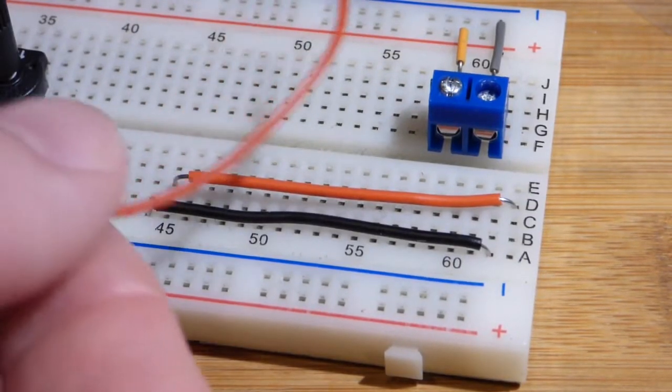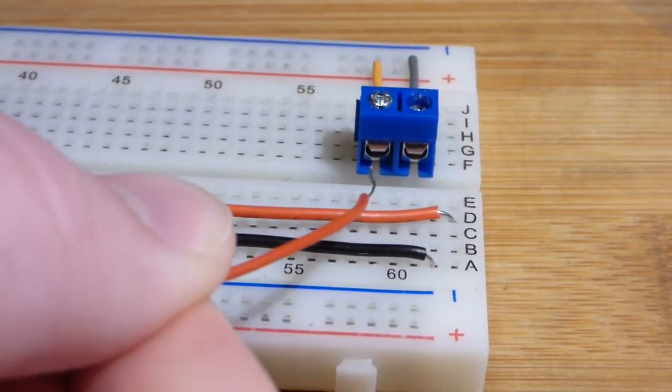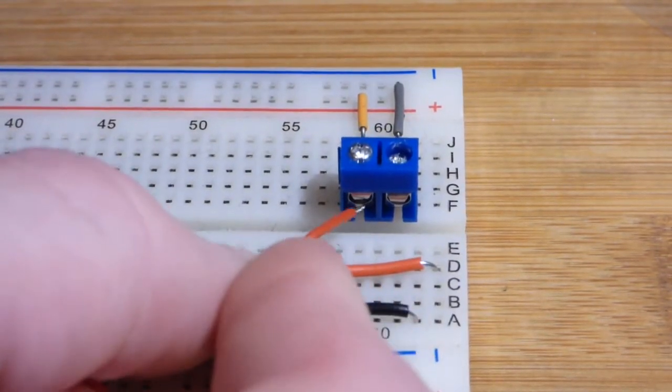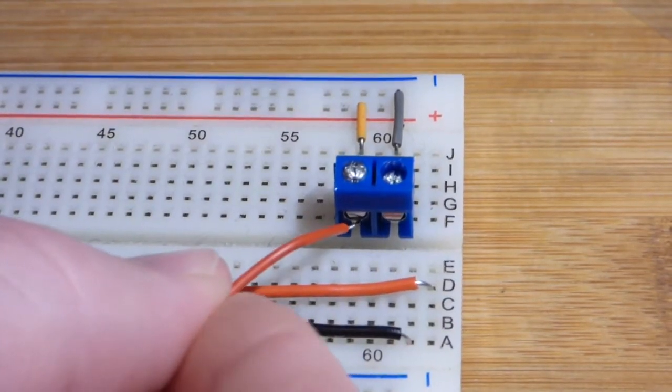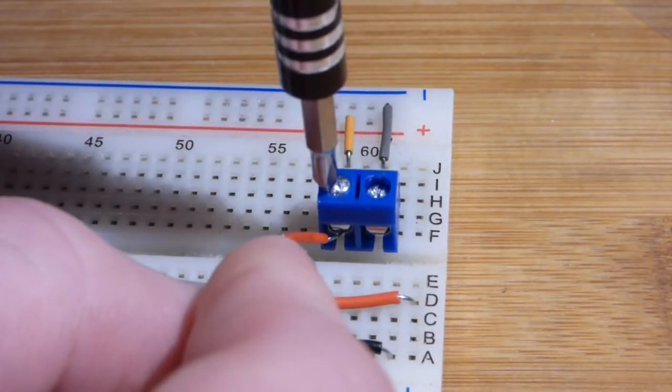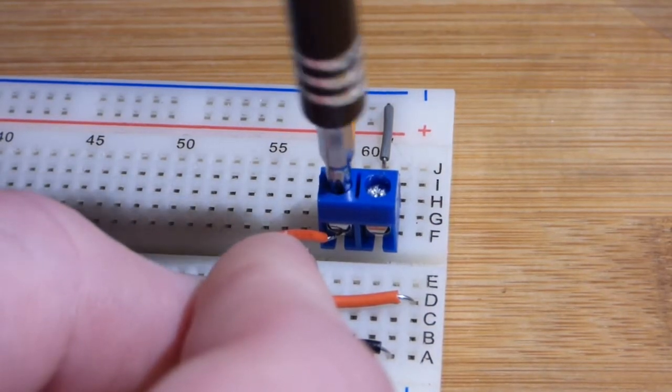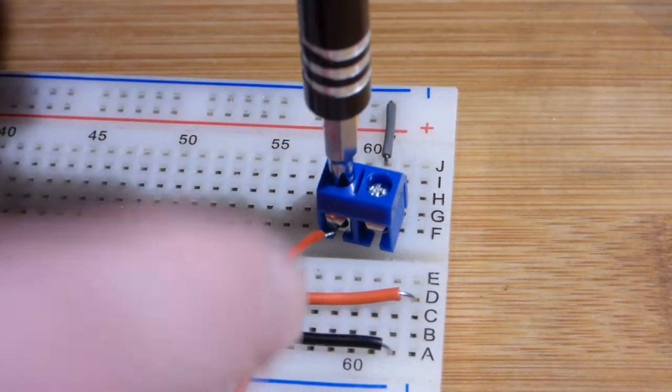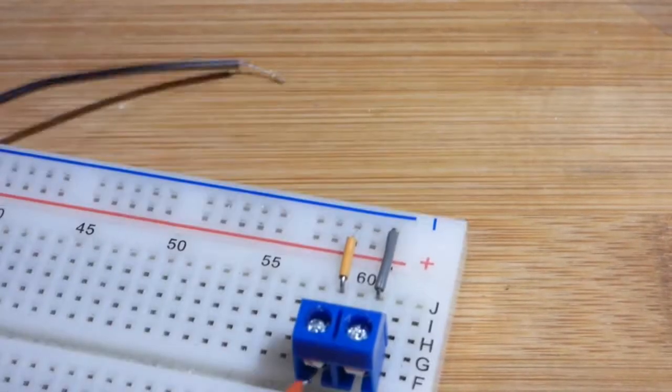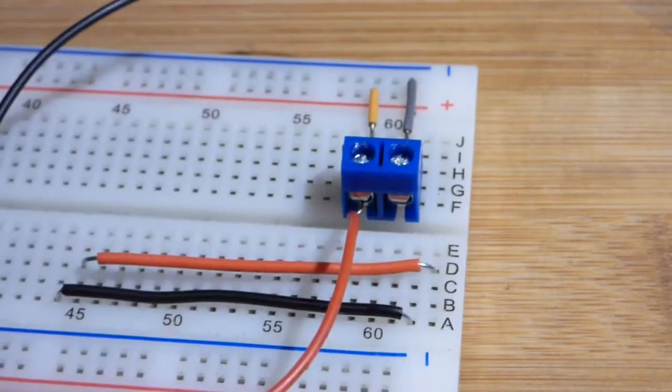We're going to have this side be the more positive and all we got to do is put it in that opening right there. Really simple. I could have these a little bit shorter, the bare wire, because there's a little bit of a risk of short circuit. Then we just screw it down. There we go, we have a nice strong connection there. It just closed down on there.